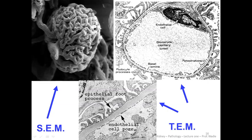If we take this square and make it larger, we can see the structures — the foot processes of the podocytes, this is the foot processes, and this is the basement membrane. Here you can see the endothelial cell pores or fenestrations — these are the endothelial cells, and there are fenestrations, or openings, or slits.